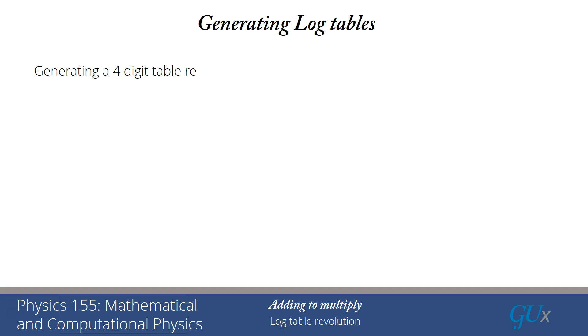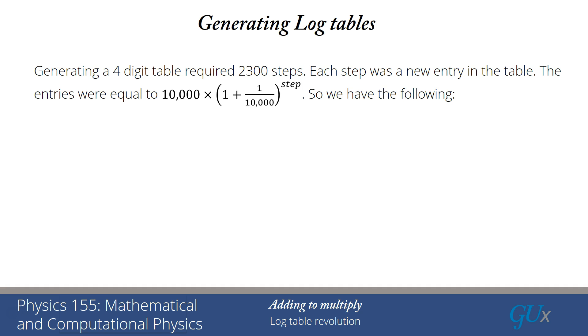Well, if we're going to do a four-digit table that requires 2,300 steps, and each step is a new entry in the table, the entries would then be equal to 10,000 times (1 plus 1 over 10,000) raised to the power step. So we have the following, and here's where the genius comes in. We start with step 0, which is 10,000. Step 1 is 10,000 times 1 plus 1 over 10,000. I can work that out fairly simply.